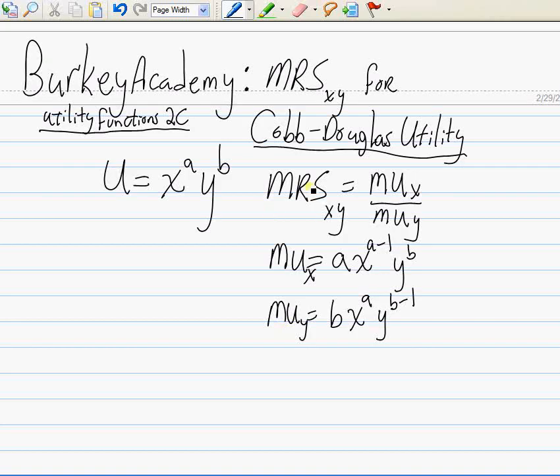Now the marginal rate of substitution just says divide those two functions. So what are we going to end up with when we divide these two functions? Let's write it over here. Marginal rate of substitution of x for y equals, we know there's going to be an a over b in here somewhere, a over b.